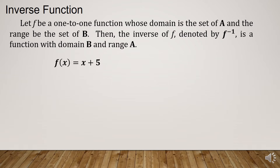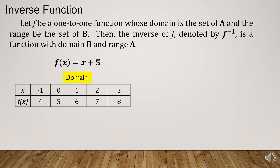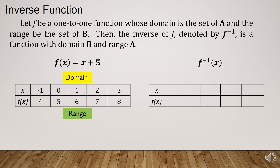Let us consider the function f(x) = x + 5 and create a table of values. The domain values are -1, 0, 1, 2, and 3, while the range values are 4, 5, 6, 7, and 8. Now, we are going to find the inverse of the given function using this table of values.